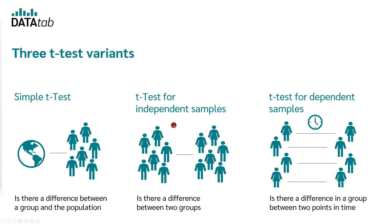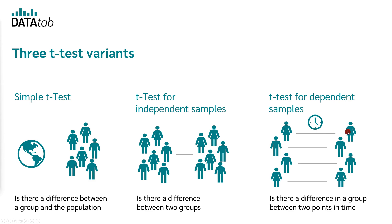The independent t-test is used to check whether there is a difference between two independent samples — for example, if there is a difference between the salary of men and women. The t-test for dependent samples is used to test whether there is a difference between two dependent samples, for example, samples where a person was interviewed at two different points in time.